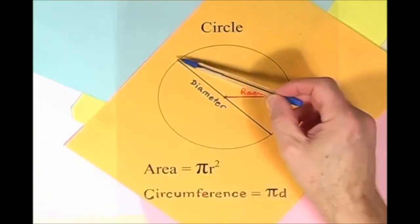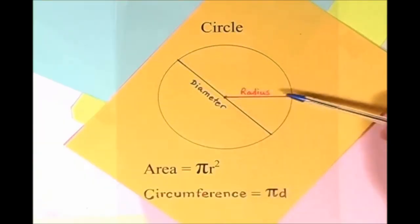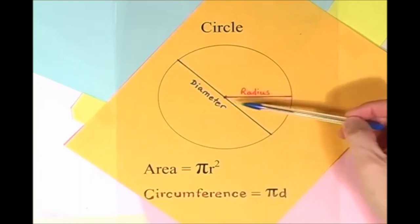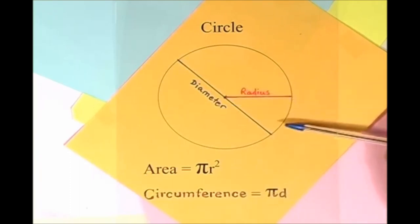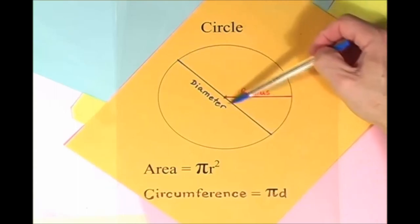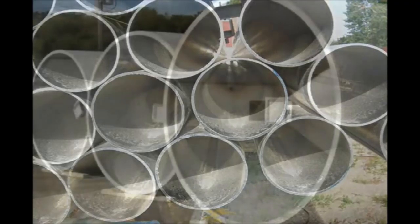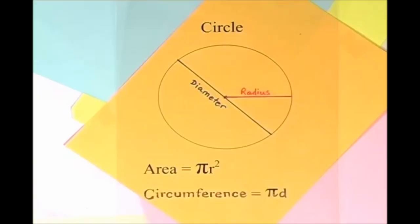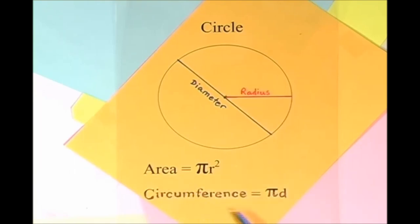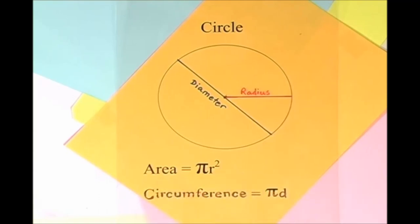Here is a circle, it knows how to get around. It has a radius from center to rim. And its diameter's a line that goes from side to side while passing through the center, now isn't that simple. Pi r squared sounds like area to me, when I need a circumference, I'll just use pi d.